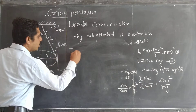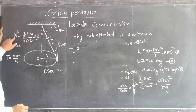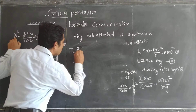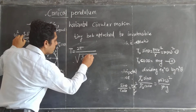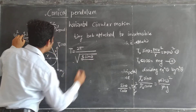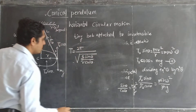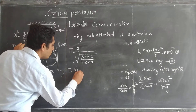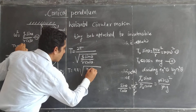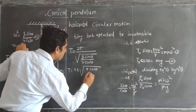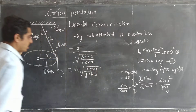The period is T equals 2π over omega, which gives T equals 2π times the square root of r·cos theta over g·sin theta.